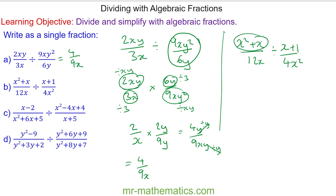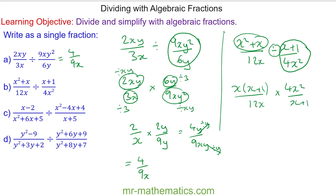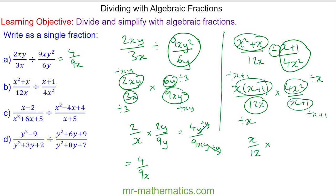We can also simplify that fraction by dividing the numerator and denominator by y, giving 4 over 9x. For question b, we factorize the numerator to get x lots of x plus 1 over 12x. We change the divide to times and find the reciprocal of the second fraction. We simplify by dividing both by x plus 1, and by x. So we have x over 12 multiplied by 4x over 1, giving 4x squared over 12, which simplifies to x squared over 3.